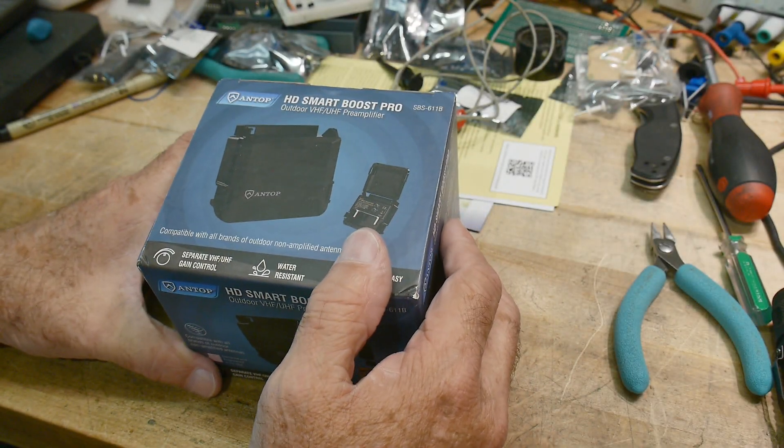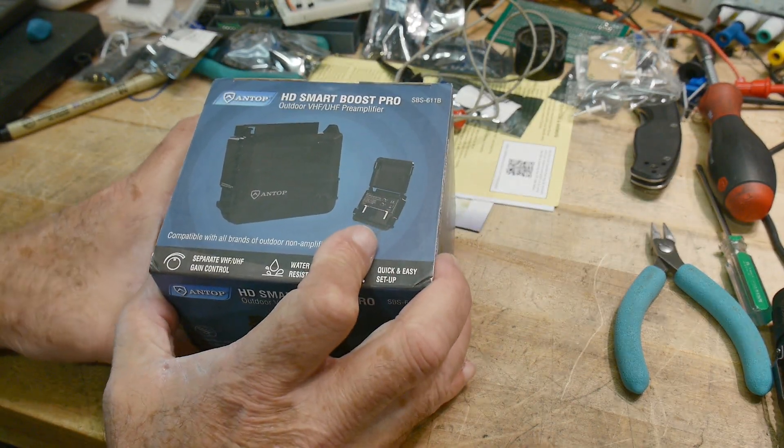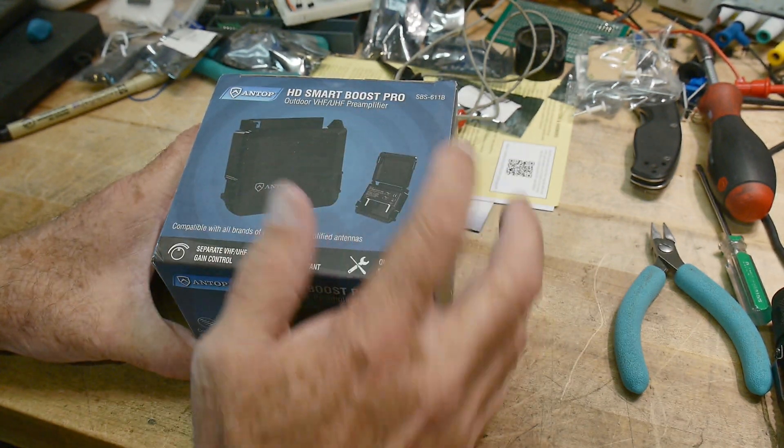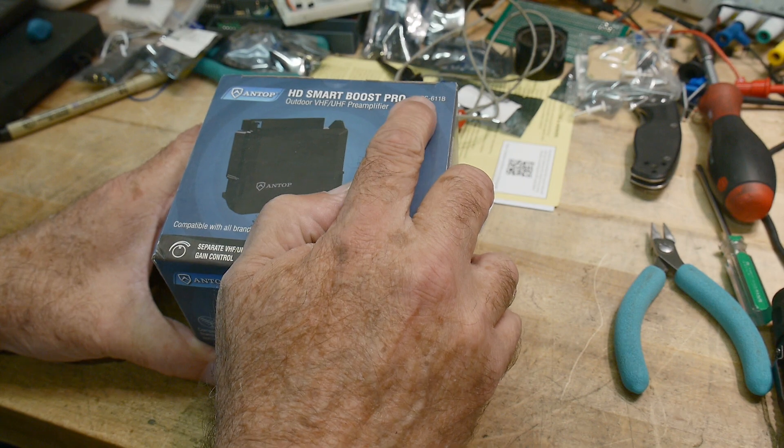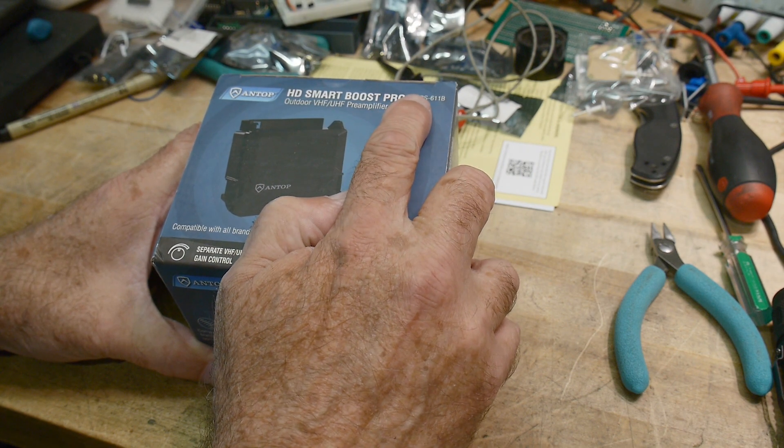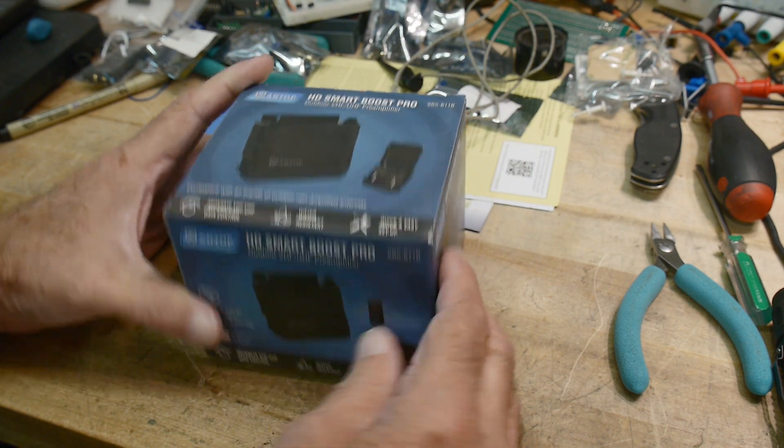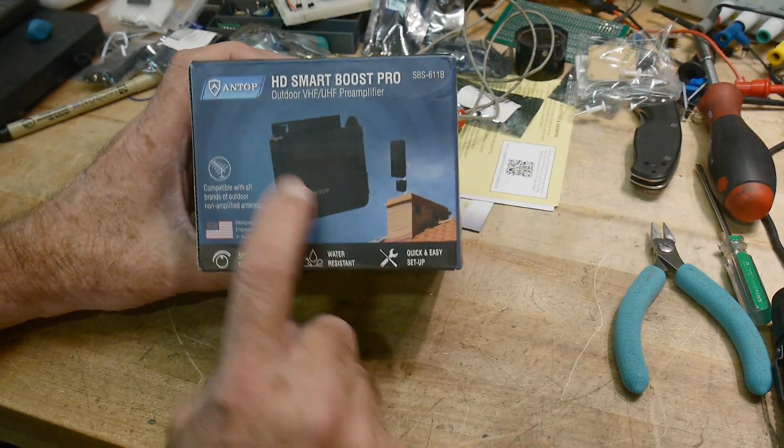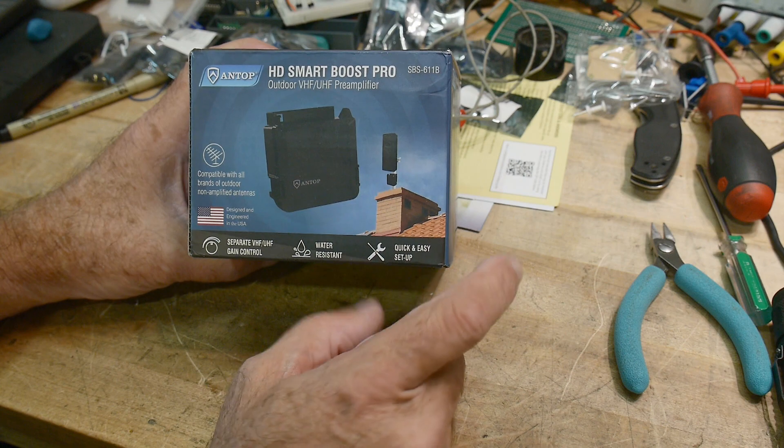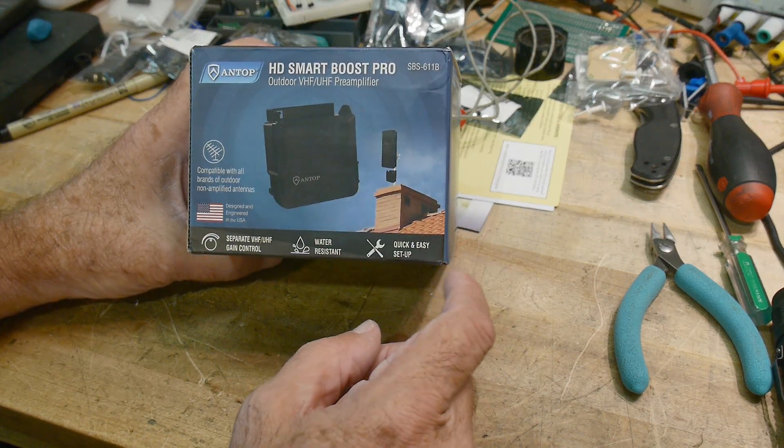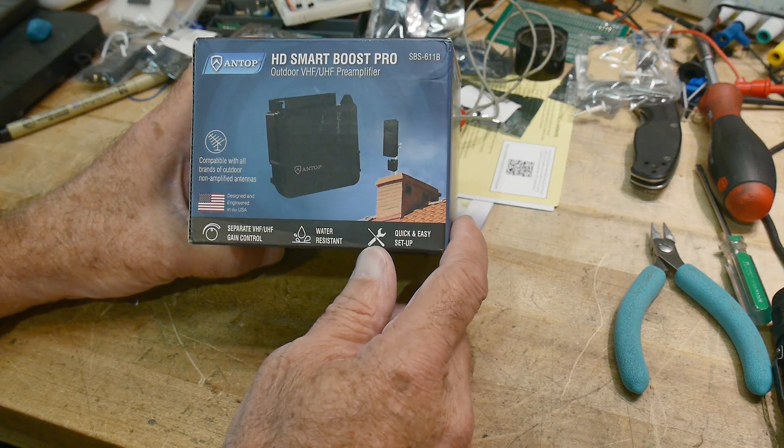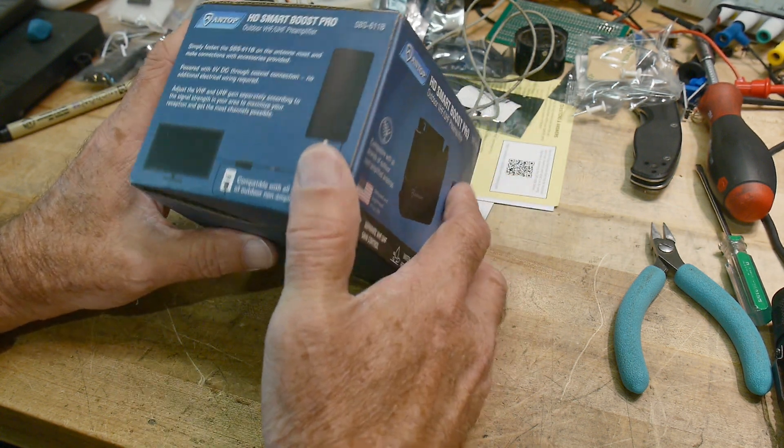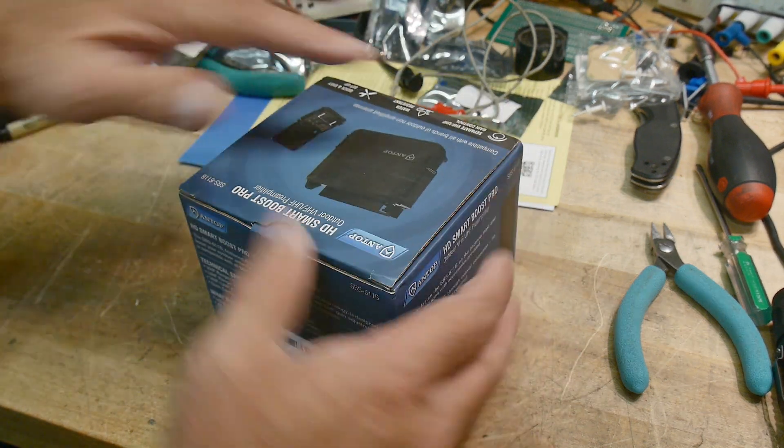Alright, we have a product sent into the channel for review. This is an ANTOP HD Smart Boost Pro SPS-611B, a little waterproof amplifier that you can put up on your roof to improve your signal reception, compatible with all brands of outdoor non-amplified antennas. So let's take a look.